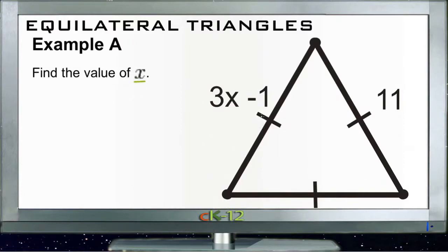Since this is an equilateral triangle with three sides that are identical, if all three sides are identical that means that this side over here that's 11 units is exactly the same as this side over here that's 3x minus 1 units.